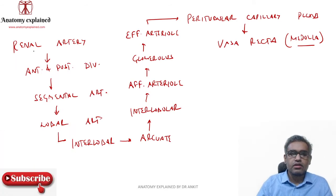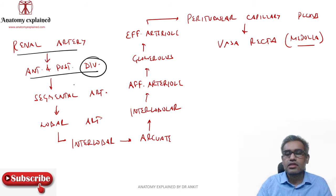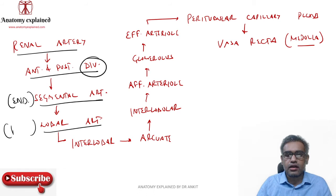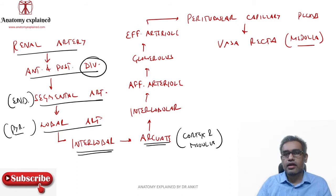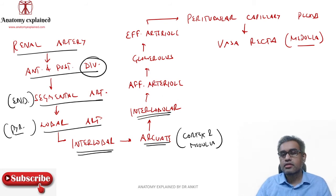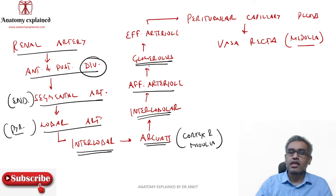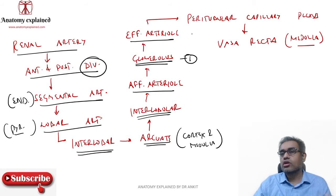The interlobular arteries are in the territories of the nephrons. They give off afferent arterioles which enter the Bowman's capsule, forming the capillary plexus known as the glomerulus. Blood comes out as an efferent arteriole. The job is not yet completed — the efferent arteriole goes around the tubules forming the peritubular capillary plexus. So there are two sets of capillaries: the glomerulus and the peritubular capillary plexus.